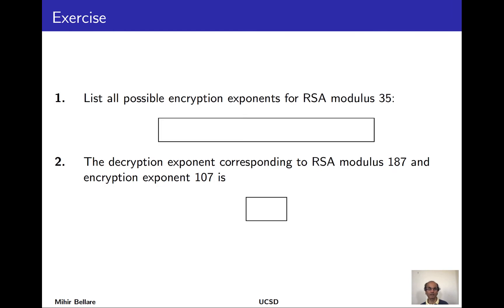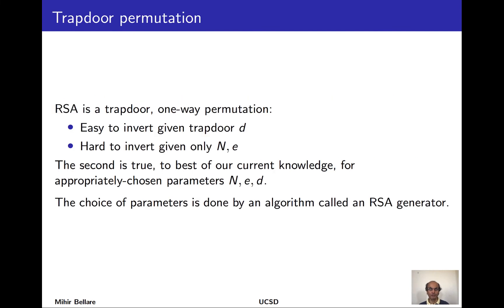From the cryptographic point of view, RSA is called a one-way trapdoor permutation. Computing the inverse function is expected to be difficult unless you have knowledge of the secret trapdoor—the decryption exponent d. We know you can easily compute f-inverse if you have d, but for appropriately chosen parameters it's hard to compute f-inverse when you don't know d. That's the one-wayness property.